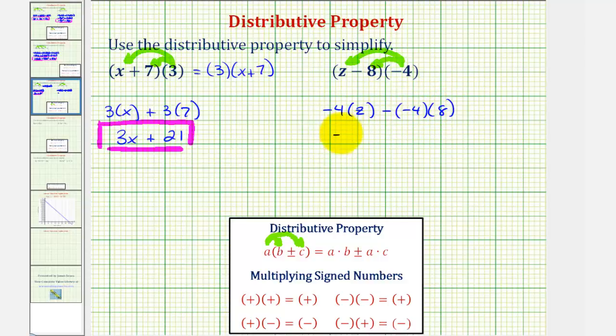So we have negative four z, and then we'd have minus negative thirty-two.